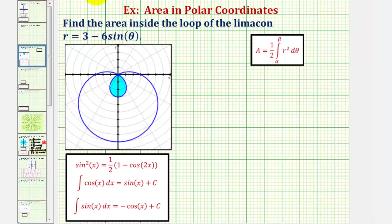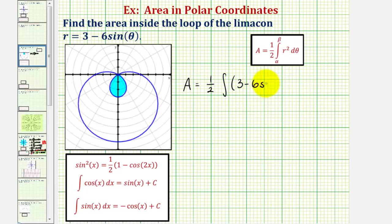This means the area equals one-half times the integral of the quantity three minus six sine theta, squared, d theta, from pi over six to five pi over six.